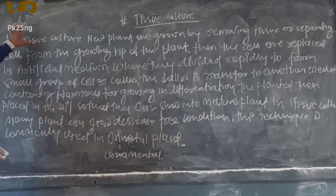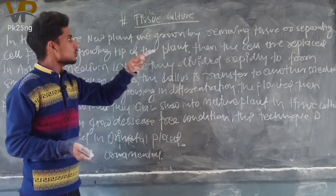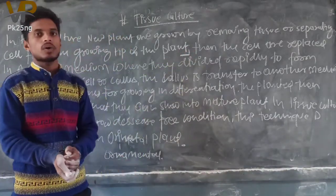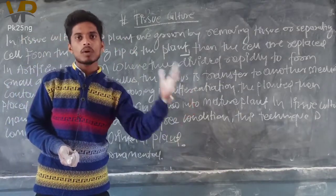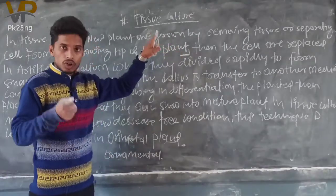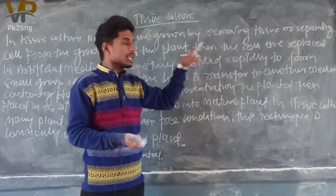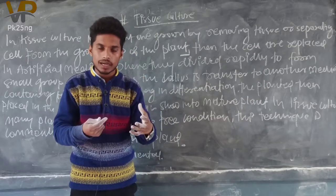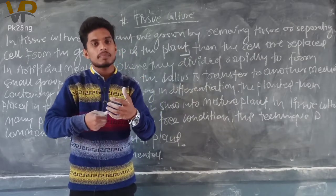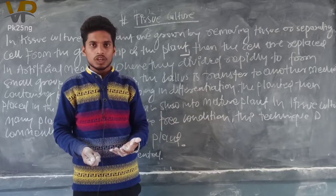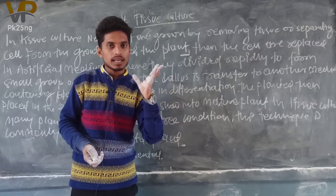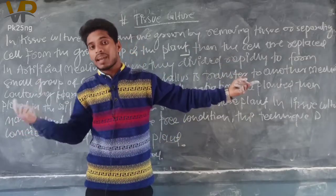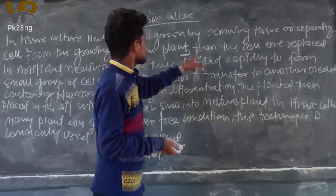In tissue culture, new plants are grown by removing tissue or separating cells from the growing tip of the plant. This is the process by which the growing part is used to grow a new plant, removing and separating cells from the growing tip of the parental cell. The parent cell has reached maturation and has the ability and capability to reproduce.